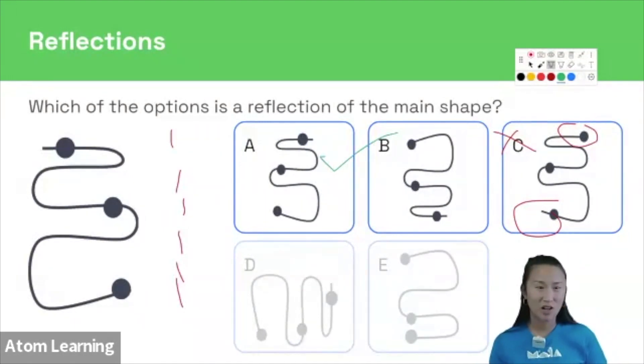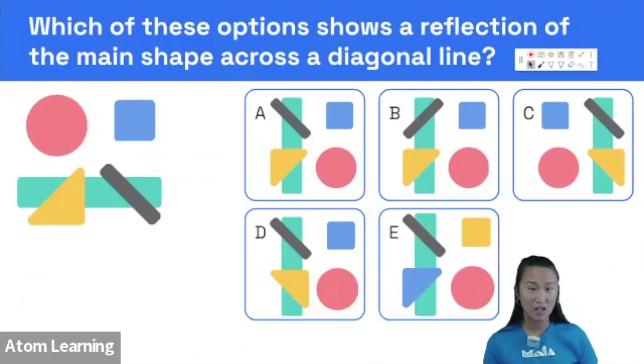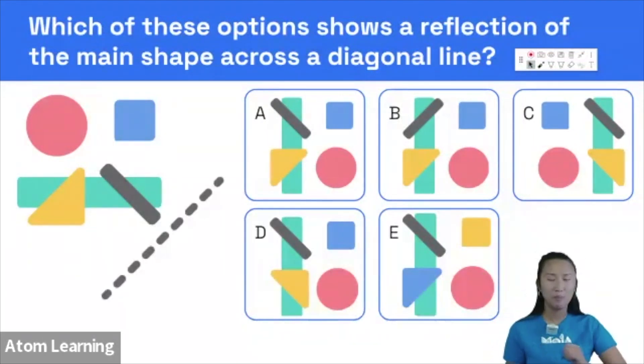Let's try a practice question just for you guys now. Here is your question. Which of these options shows a reflection of the main shape across a diagonal line? So we have our mirror line.